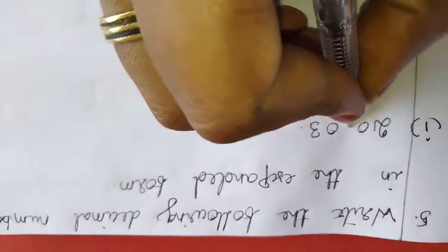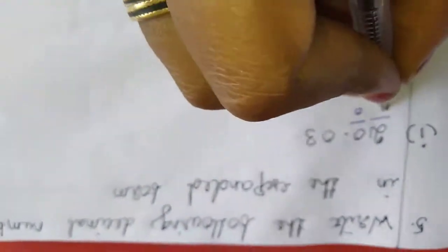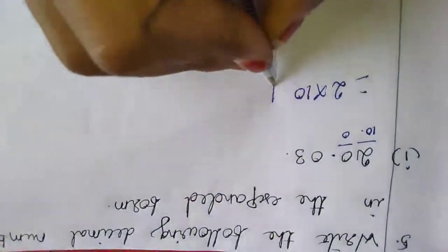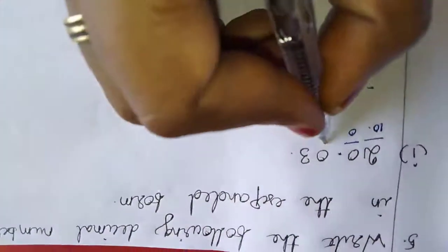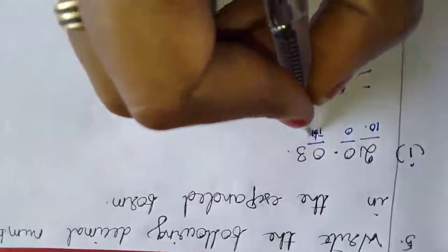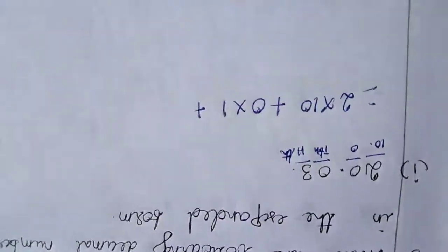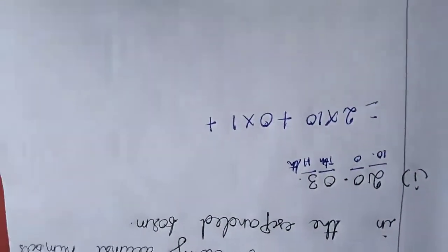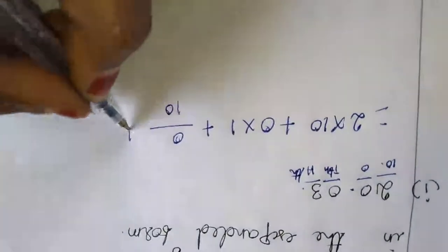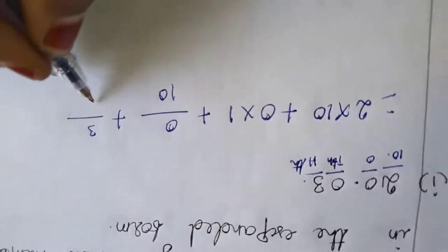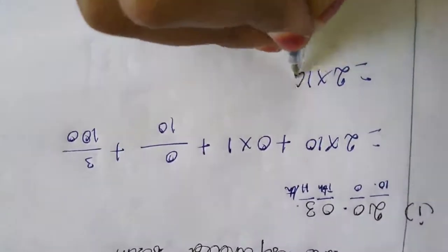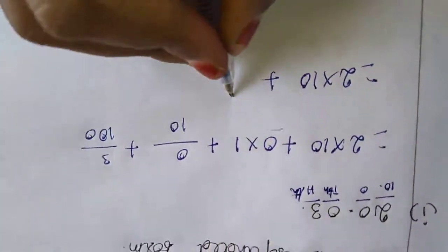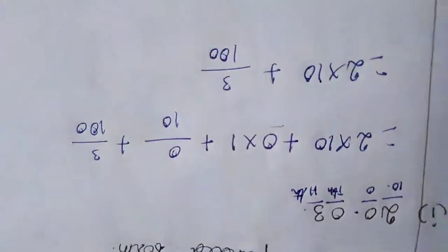Just listen here. The digits before the dot — this is the 1's place, this is the 10's place. So we write: 0 into 10 plus 0 into 1's. After the dot: this is the 10th place, this is the 100th place. The 10th means that number divided by 10, plus this number divided by 100.